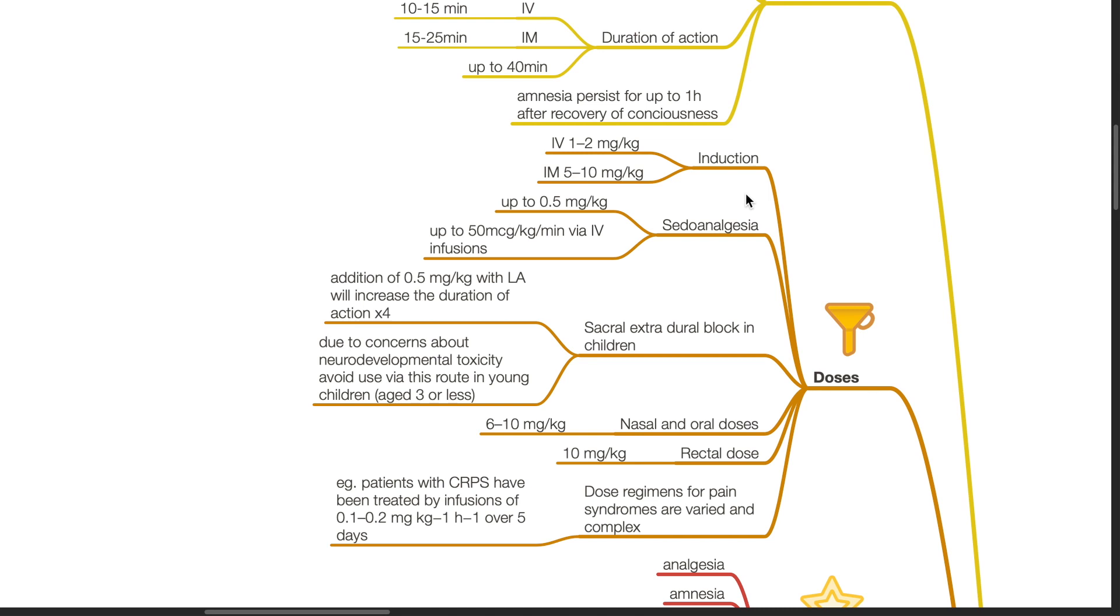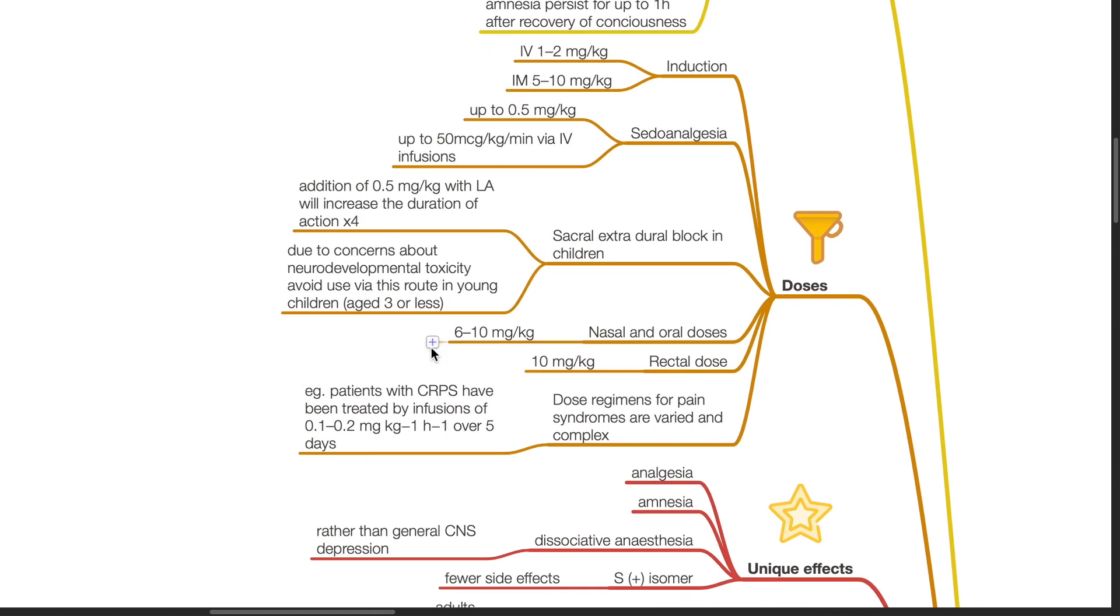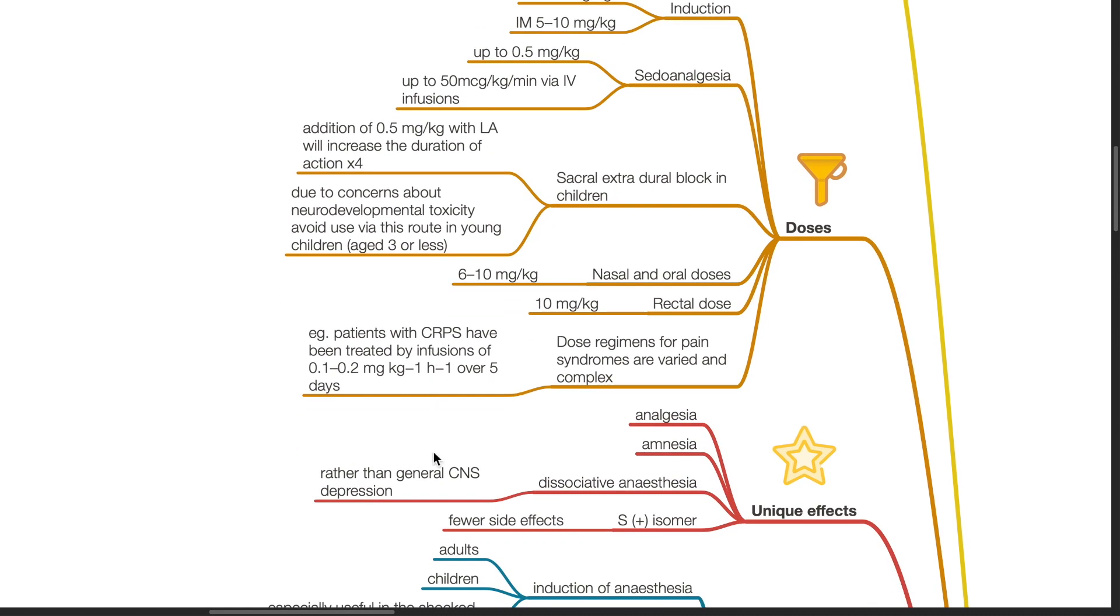The dose for sacral extradural block in children: addition of 0.5 mg per kg with local anesthetics will increase the duration of the LA by 4 due to concerns about neurodevelopmental toxicity. Avoid use via this route in young children aged 3 or less. The dose for nasal and oral routes is 6-10 mg per kg. The rectal dose for ketamine is 10 mg per kg. Dose regimens for pain syndromes are varied and complex. Patients with CRPS have been treated by infusions of 0.1 to 0.2 mg per kg per hour over 5 days.